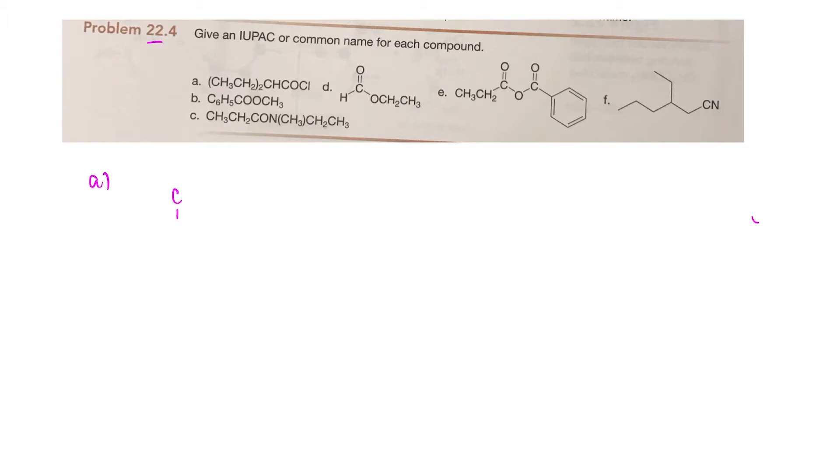So we've got a CH and we've got two ethyl groups off of that carbon, and then we have a C bonded to O and Cl. So this is a carboxylic acid. Let's go ahead and count the longest chain. So this is going to be a derivative of butanoic acid.